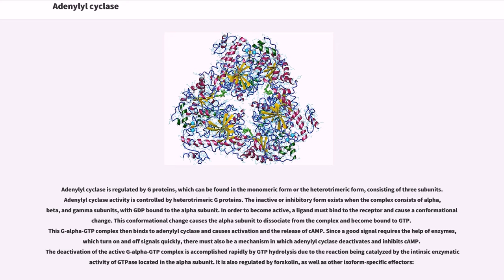Since a good signal requires the help of enzymes which turn on and off signals quickly, there must also be a mechanism in which adenylyl cyclase deactivates and inhibits cAMP. The deactivation of the active G-alpha GTP complex is accomplished rapidly by GTP hydrolysis due to the reaction being catalyzed by the intrinsic enzymatic activity of GTPase located in the alpha subunit.